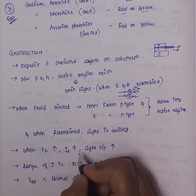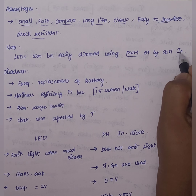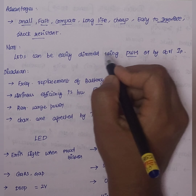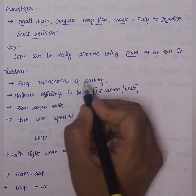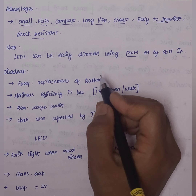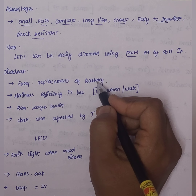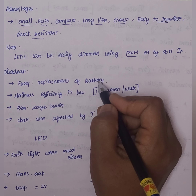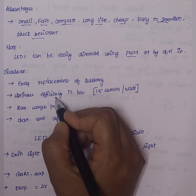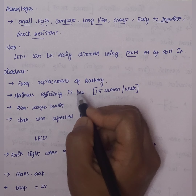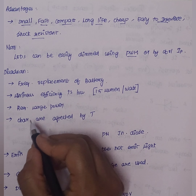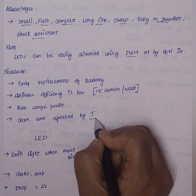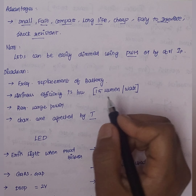In this range of LEDs, we have frequent replacement of battery. However, it is long-lasting. The luminous efficiency is low — that is 1.5 lumen per watt. It requires large power. The characteristics are affected by temperature. These are the disadvantages.